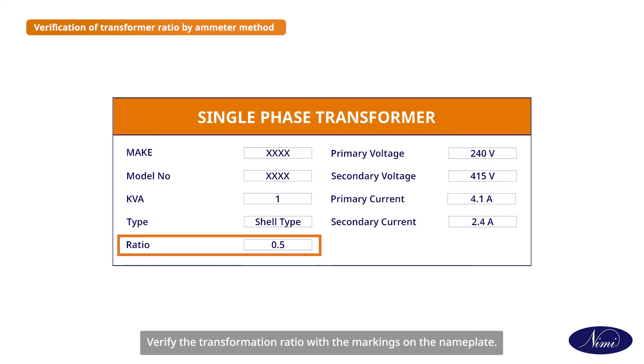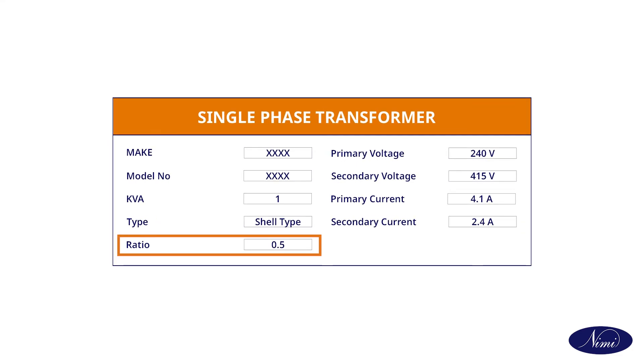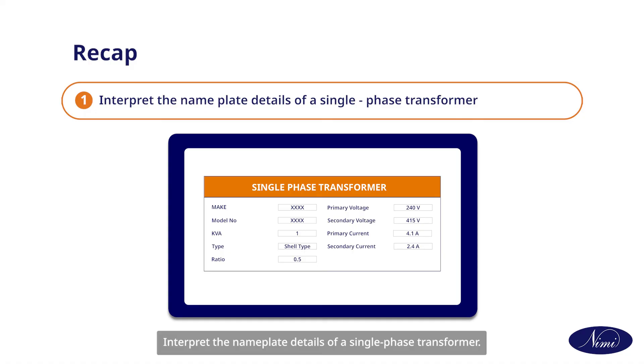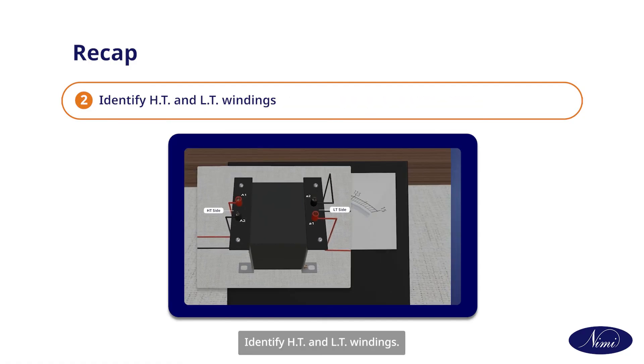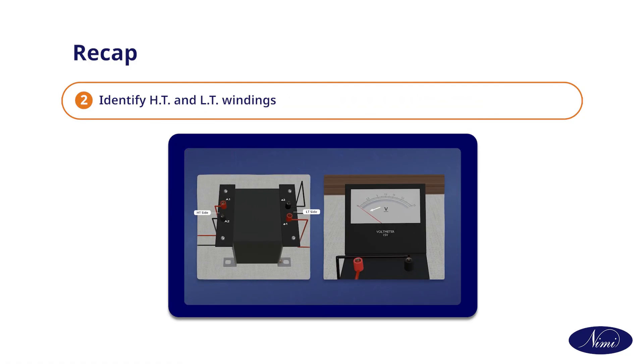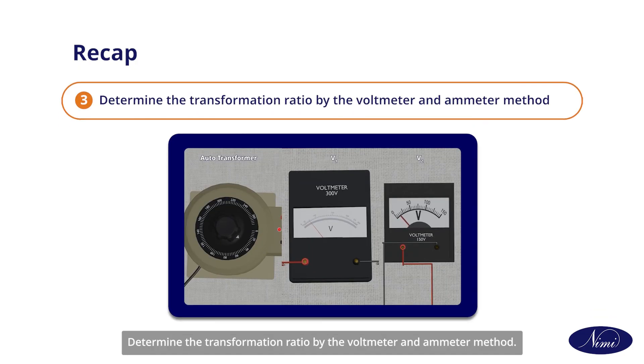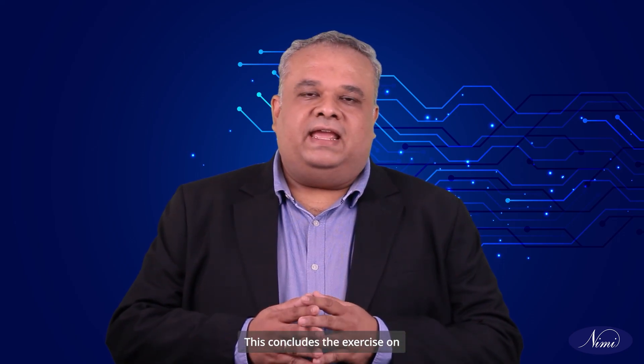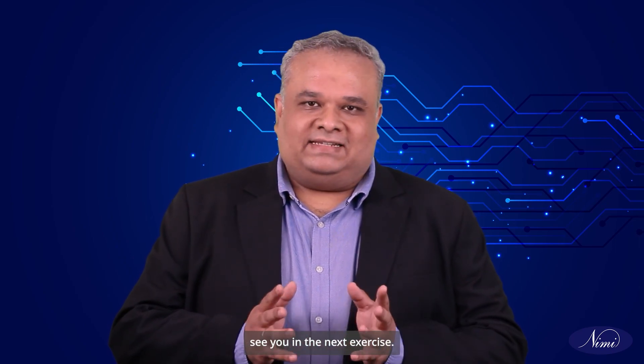Verify the transformation ratio with the markings on the nameplate. After watching this video, you will be able to interpret the nameplate details of a single phase transformer, identify HT and LT windings, and determine the transformation ratio by the voltmeter and ammeter method. This concludes the exercise on how to verify terminals, identify components, and calculate the transformation ratio of a single phase transformer. Thank you, see you in the next exercise.